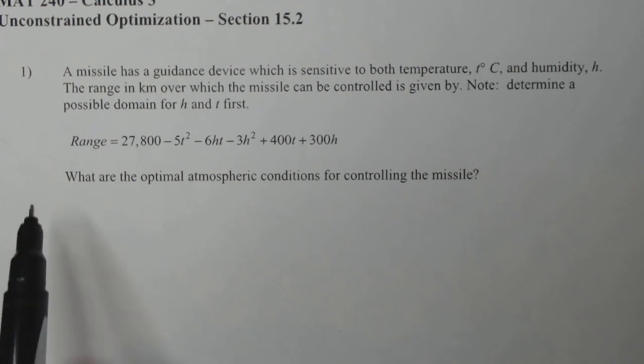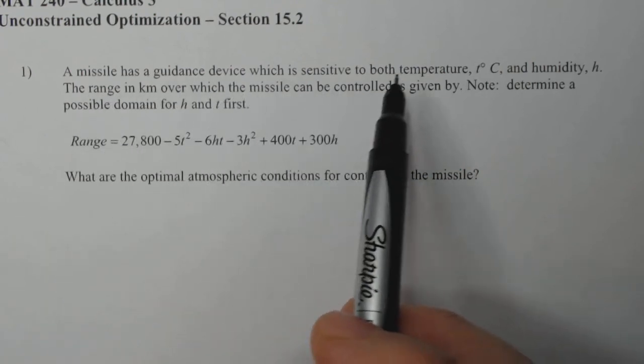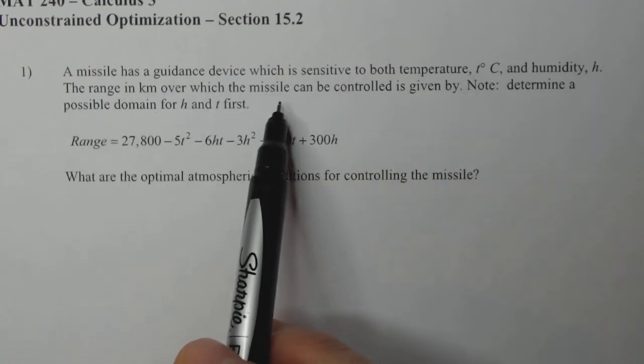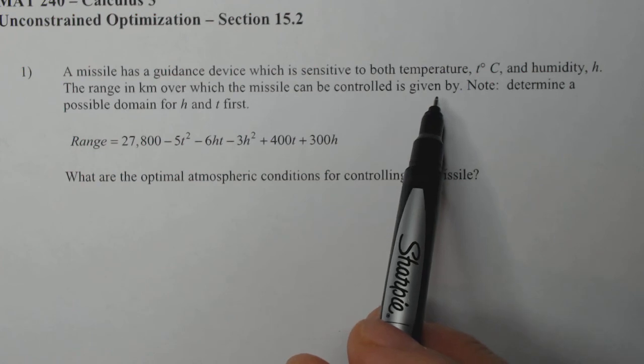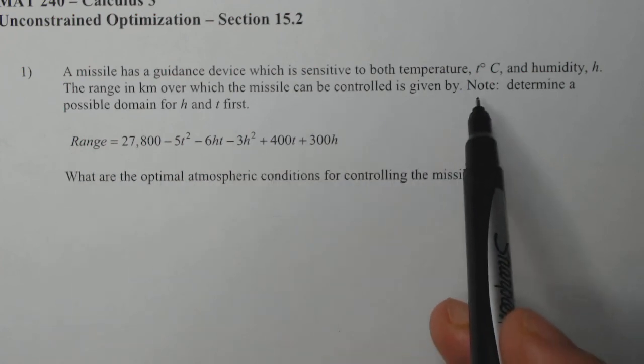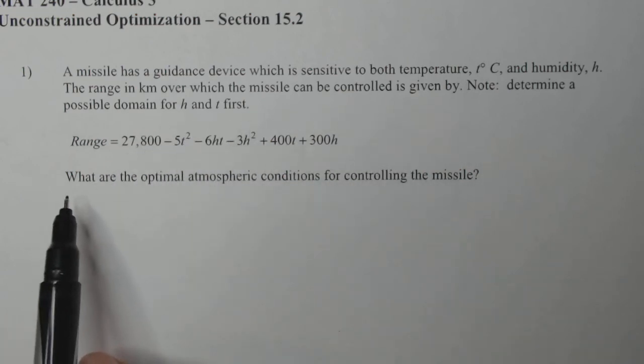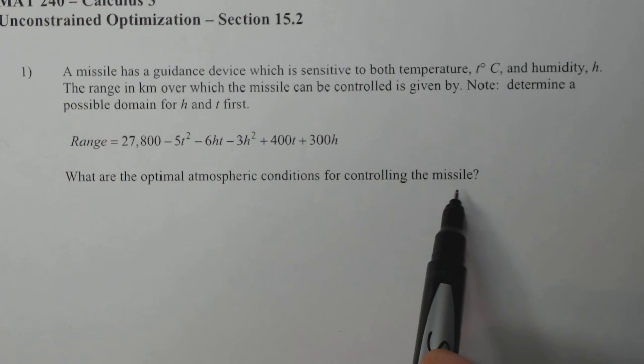A missile has a guidance device which is sensitive to both temperature and humidity. The range in kilometers over which the missile can be controlled is given by this function right here. Note to determine a possible domain for H and T first. What are the optimal atmospheric conditions for controlling the missile? This is the range of our missile, so we're going to try to maximize the range. We want to be able to shoot it as far as we can. What are those conditions in which the missile goes as far as possible based on its technology?